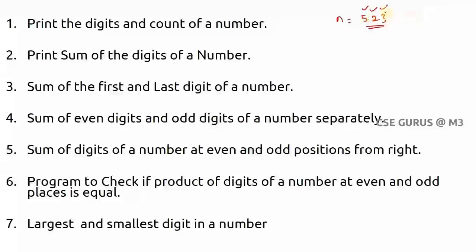If we want to print from the right side, how do we get digit 3 — the digit in the ones position? When you divide a number by 10, the remainder is the last digit. For example, 523 % 10 gives remainder 3. Even 28 % 10 gives 8. So when you divide any number by 10, the remainder is the last digit, which we can then print.